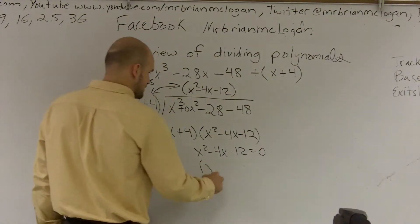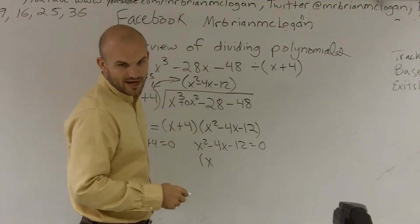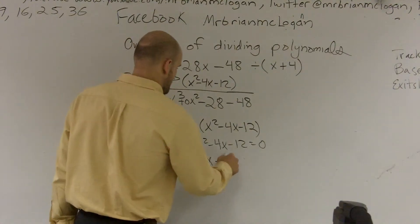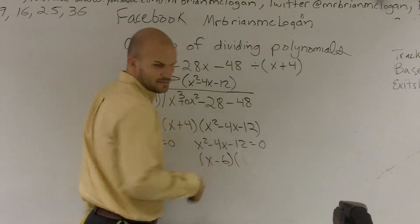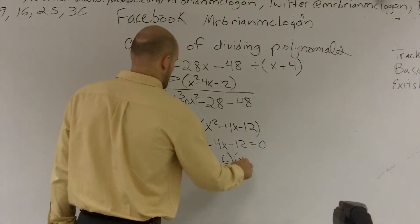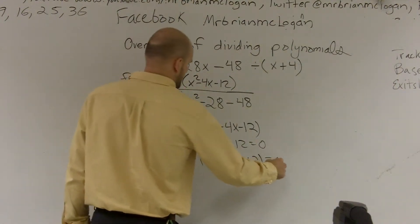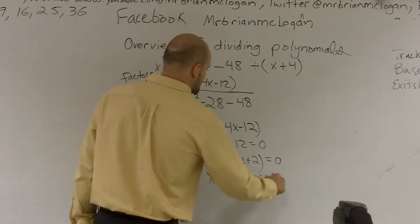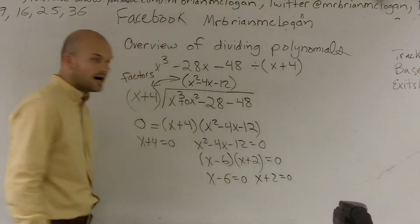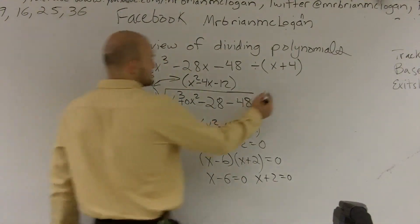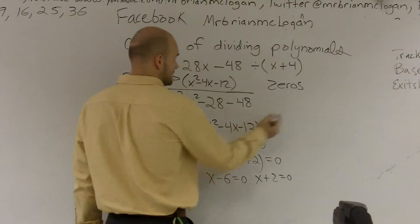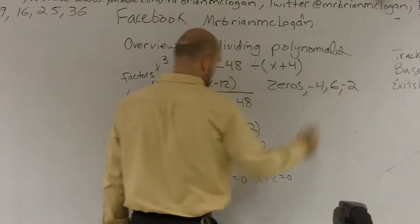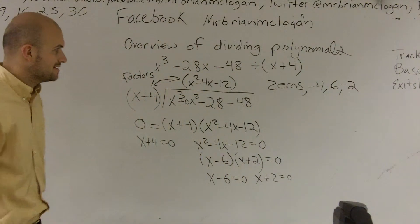So therefore, this can be factored even further. I'm just going to write x plus 4, x minus 6, x plus 2. Yeah, that's right. So therefore, I can say x minus 6 equals 0 and x plus 2 equals 0. Now, this is so helpful because I can now say that my zeros are negative 4, 6, and negative 2 when solving for x.